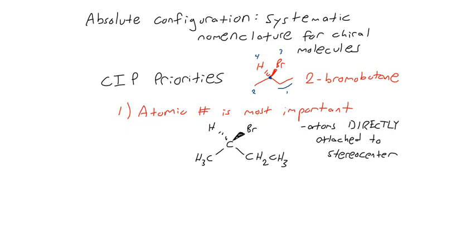Bromine is going to be the highest — it has a very high atomic number — so we rank that as number one. Carbon is our second highest atomic number, but we have two substituents that are carbon atoms, so we'll come back to that. Hydrogen has an atomic number of one, so it's going to be our lowest priority.